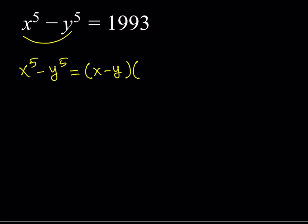The other factor is going to look like this. What do we multiply x by to get x to the fifth? It should be x to the fourth. You start with the highest power of x, which is x to the fourth, and then every term the power of x goes down one by one while the power of y goes up by one. In the first term of the second factor there's no y. Since the original sign is a minus sign, the first factor is x minus y. In the second factor, everything is going to be a plus sign — the sign does not alternate.